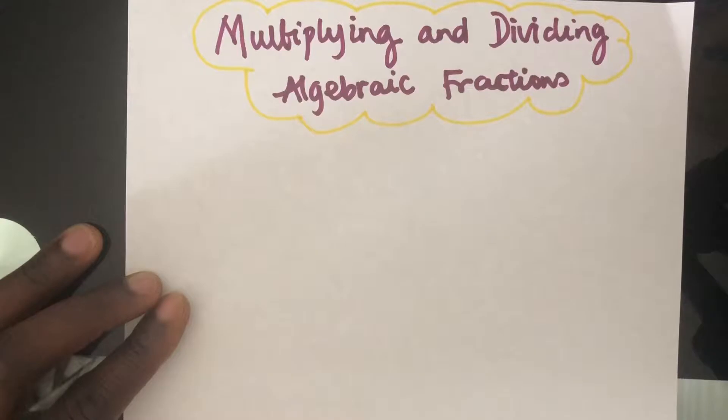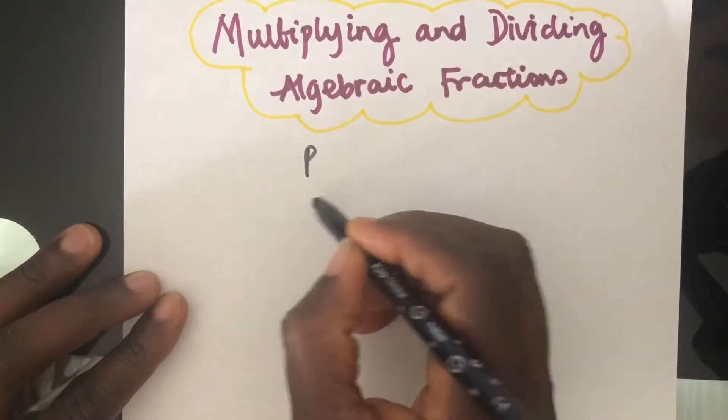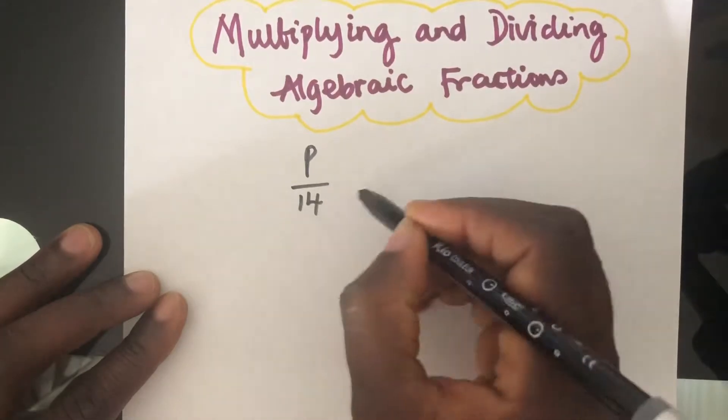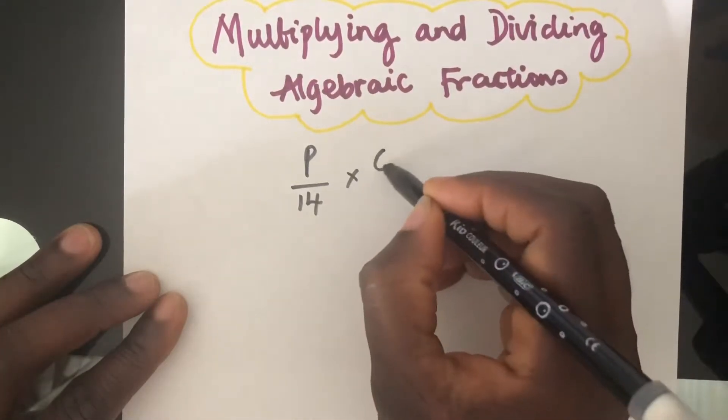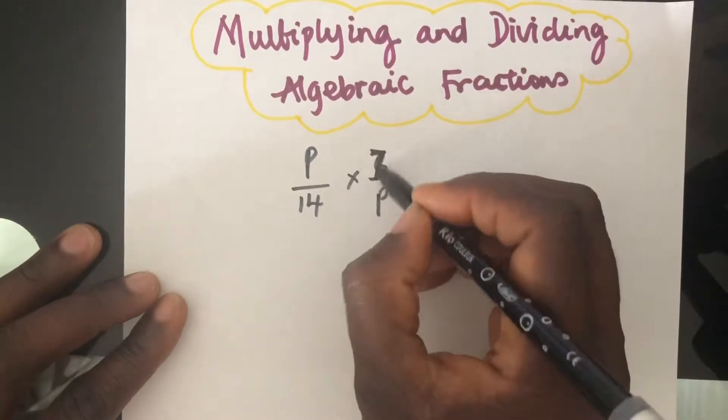Let's start off with a very simple example. So if we have P over 14 times 6 over P, or let me make that 7, 7 over P.